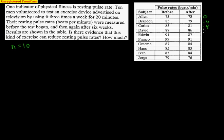David had a difference of negative one. Edwin had a difference of negative four as well. And Franco here, he had a difference of negative eight. And Graeme, whatever, he had a difference of negative three. And Hans had a difference of negative two. Ivan actually had a difference of positive one. His heart rate got higher after the program. And Jorge here had a difference of negative three.